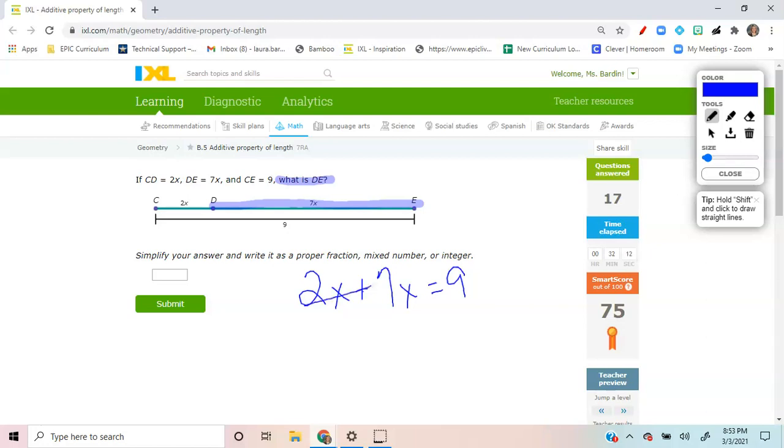2X plus 7X is equal to 9X. Then we're going to equal 9. Divide by 9. Divide by 9. X is equal to 1.